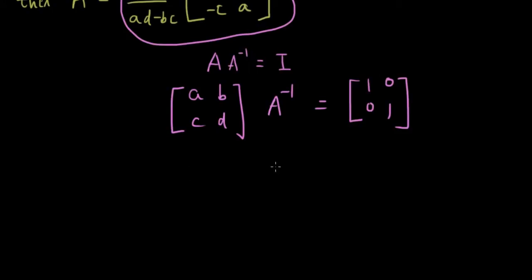Because I don't know what A inverse is at the moment, I'm just going to substitute in four other letters. So let's just put in E, F, G, H, and that is equal to [1, 0; 0, 1].